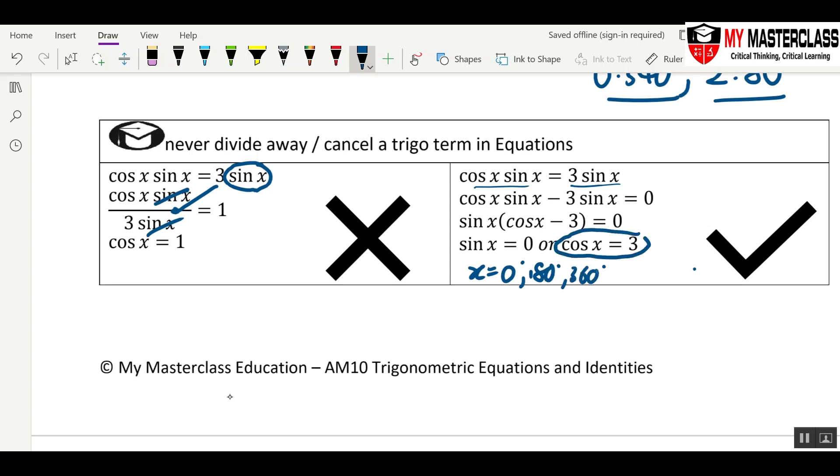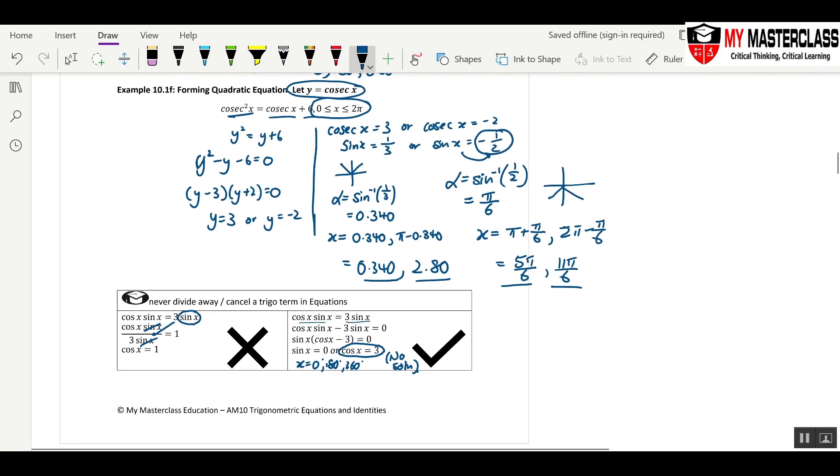For sine and cosine curve, anything more than one or less than negative one, this one, no solution. And this is how, these are the basics solving trig equations.